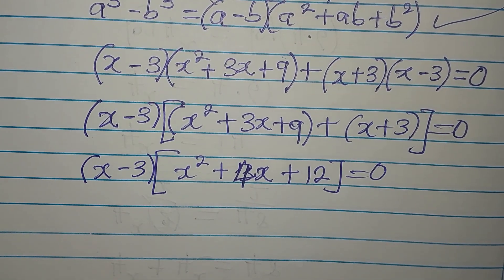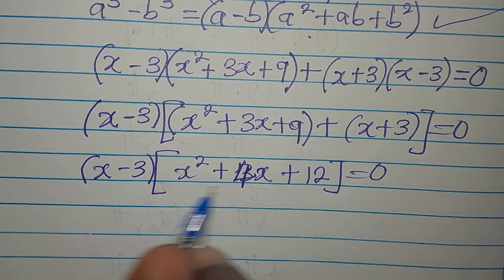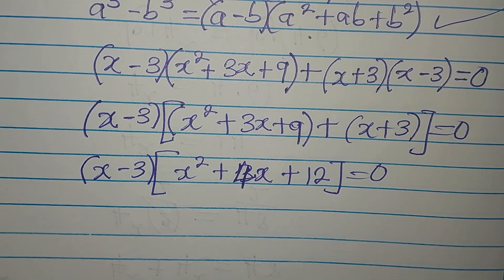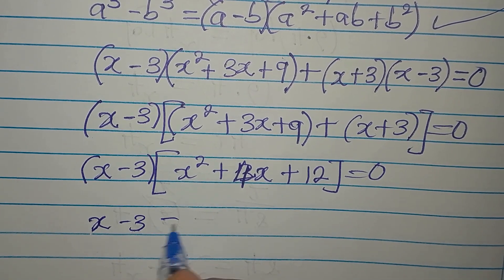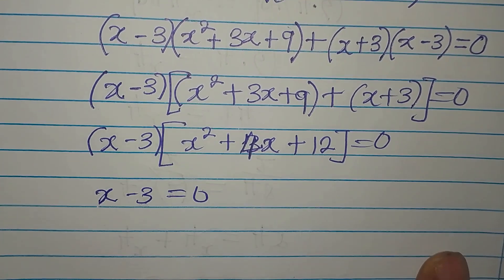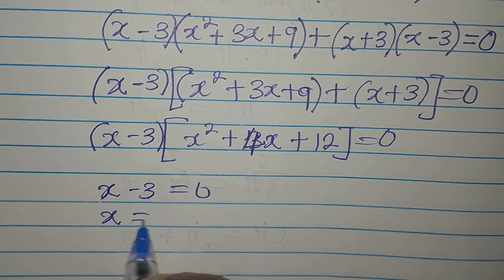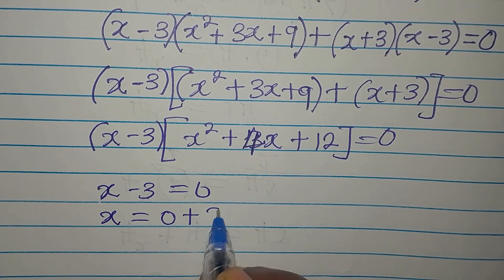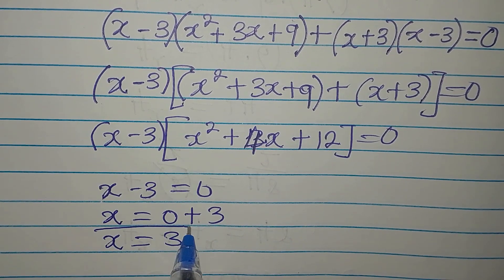Since we're multiplying these two factors to get zero, either factor can be zero. Setting x - 3 = 0 gives us x = 3. That's our first solution.